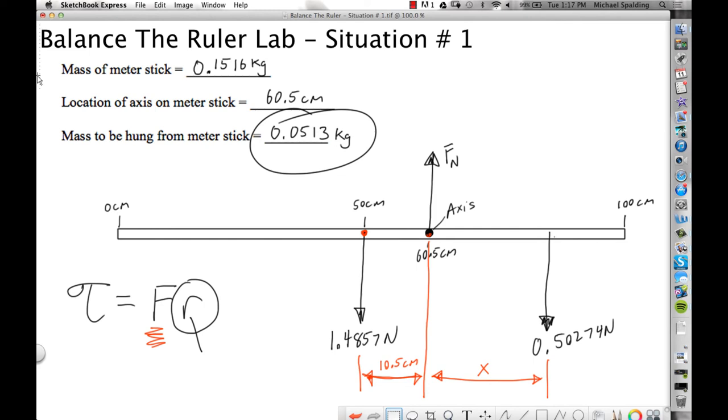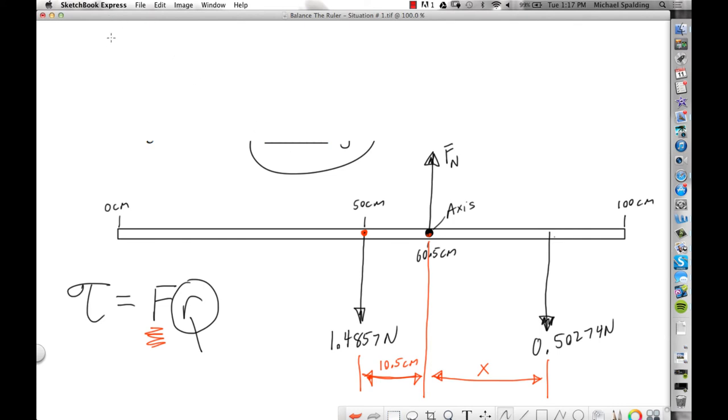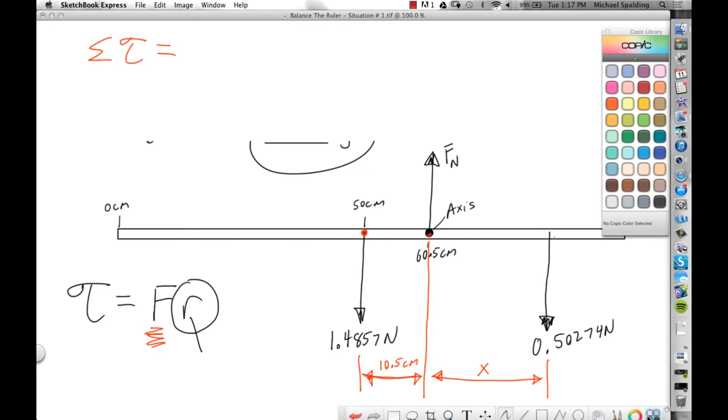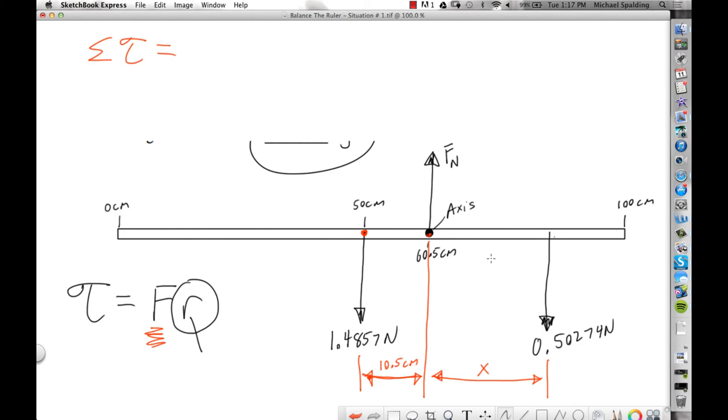So now let's solve it. We got the distances. We're going to sum the torques. Sign convention for torque is clockwise, counterclockwise. This guy right here is trying to rotate the axis clockwise. This guy right here is trying to rotate the ruler counterclockwise. So let's say that clockwise is plus, counterclockwise is minus. You have to know where the axis is. So if the axis is right there, this force, just imagine, it's pulling down on the meter stick.